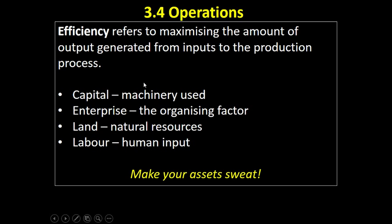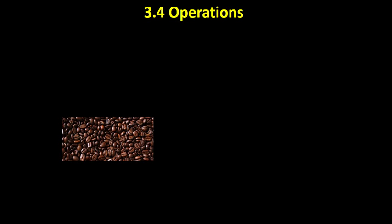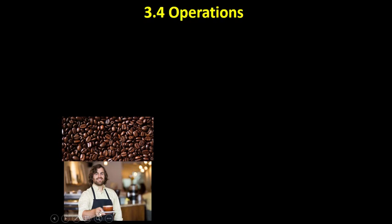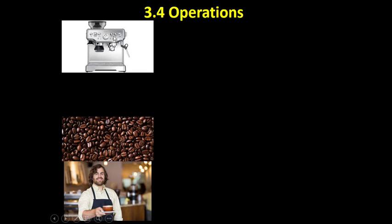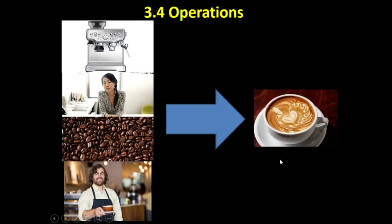The key to being efficient is to make your assets sweat — you want to get as much output from these inputs as possible. For example, in a coffee shop: the land includes natural resources like coffee beans, the labor is the baristas, capital includes the coffee machines, and enterprise is the entrepreneur or manager who organizes all these factors to produce the output — a cup of coffee.